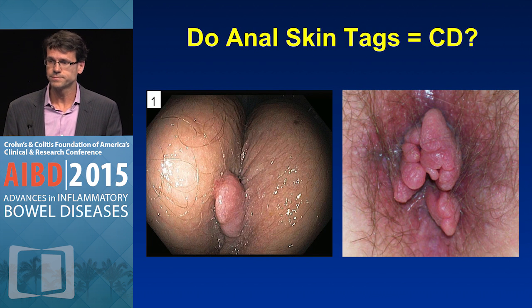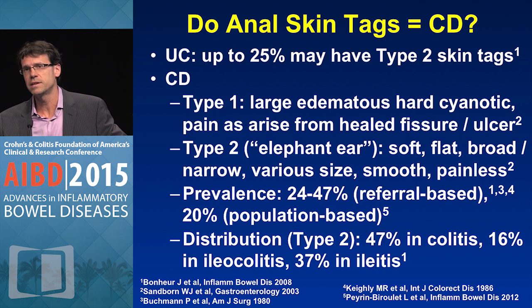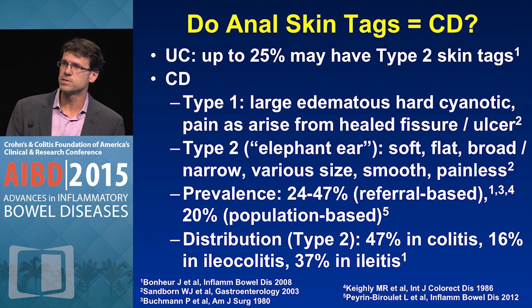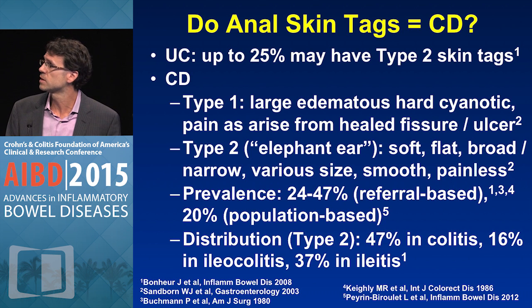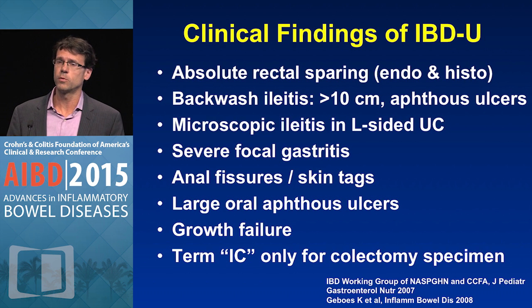Speaking of skin tags, on the left we have type 1 skin tags, which tend to be hard, potentially cyanotic and painful, and type 2 skin tags, which are the non-painful elephant ear soft skin tags. Do skin tags mean that you have Crohn's disease? There's not much data in ulcerative colitis, but in a study from Lennox Hill — the largest focusing on type 2 skin tags — a quarter of patients with ulcerative colitis had anal skin tags. As for the type 1 hard cyanotic skin tag we often see in Crohn's patients, keep in mind they can also arise from healing of a hemorrhoid and thus be seen in the general population or in patients with UC. In population-based studies, skin tags are seen in about 20% of patients with Crohn's.